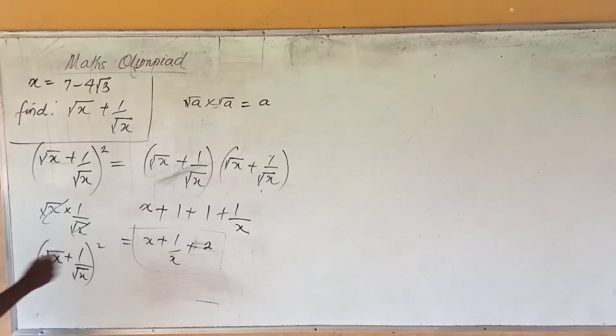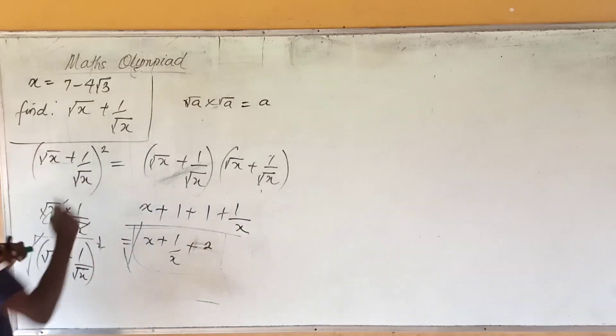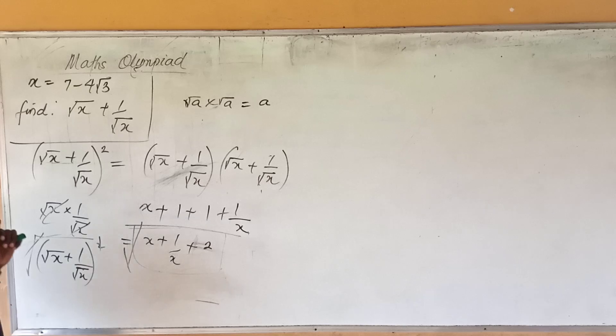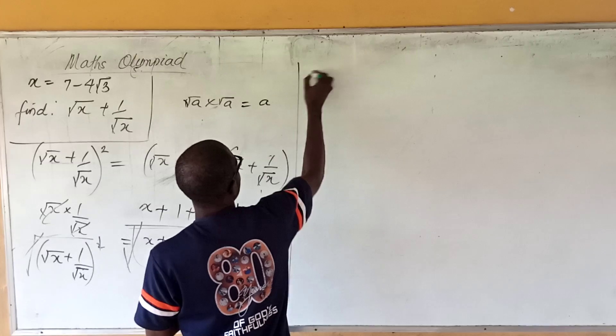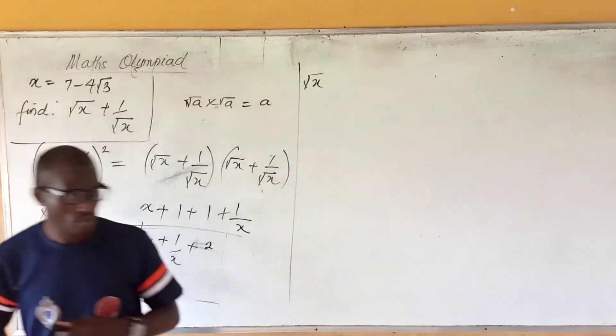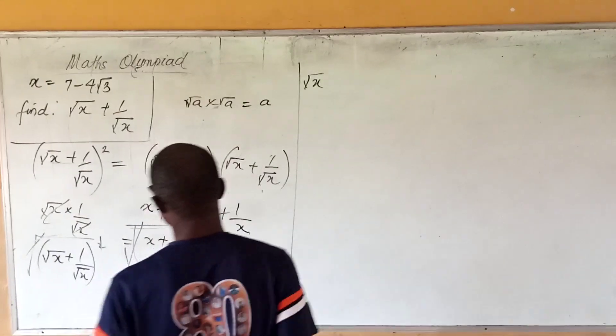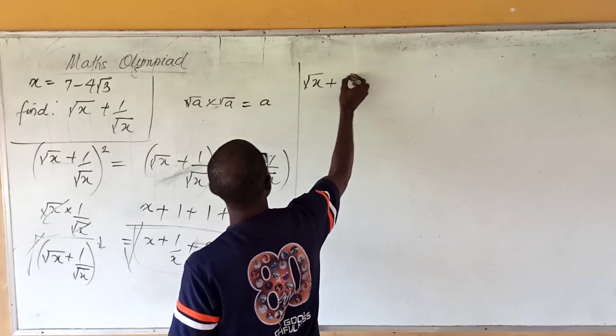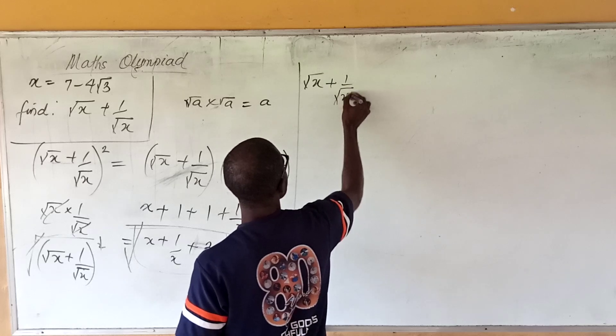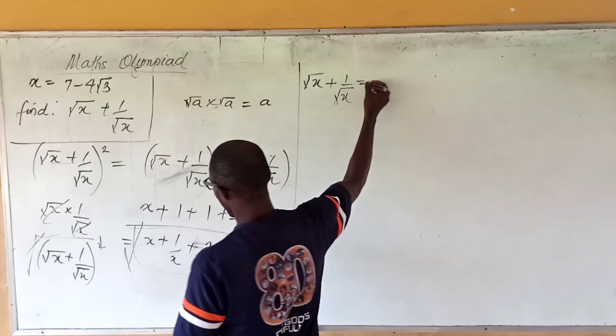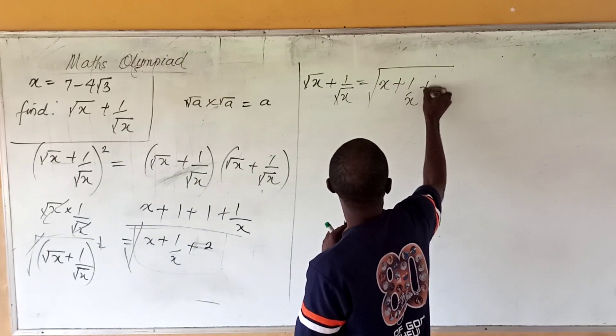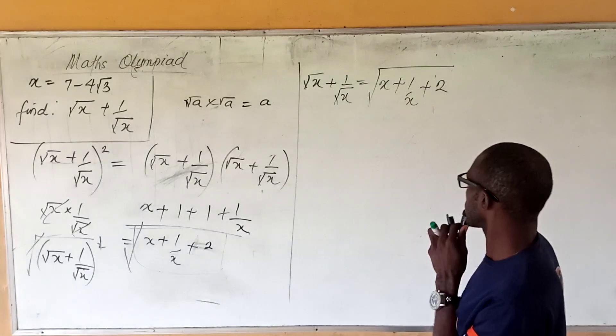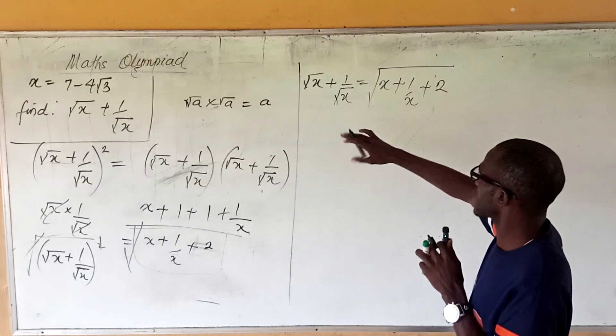So what do we do to remove this square? We take square root of both sides isn't it? So by taking square root of both sides what we now have is that √x + 1/√x which was what we were given before initially is equal to the square root of x + 1/x + 2. We've gotten to this point.